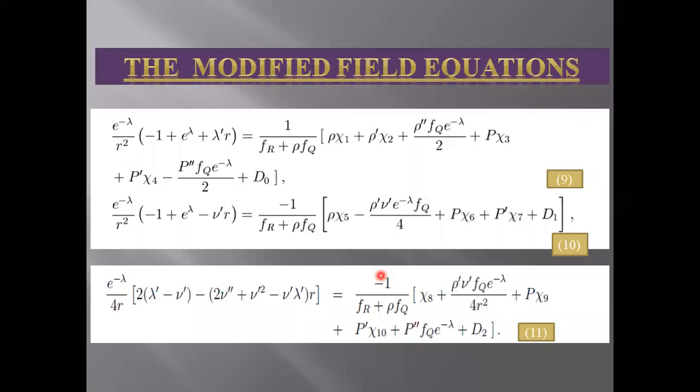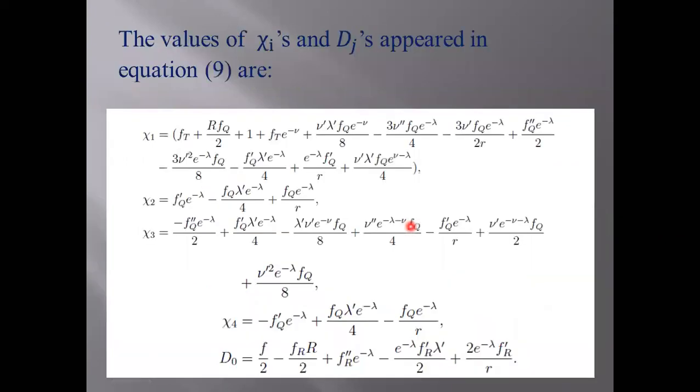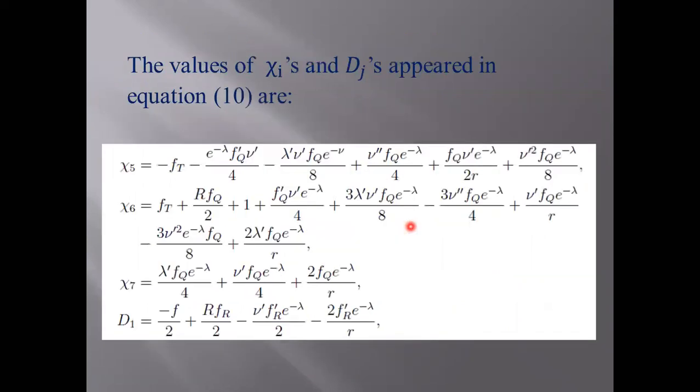As you can see here, there are terms χ₁, χ₂, χ₃, χ₄ and d₀, d₁ and so on appearing here. The values for these χᵢ and dⱼ are given here. The values of χᵢ denote the effect of f(R,T,Q) theory and that of dⱼ appearing here denote the effect of the dark source terms.